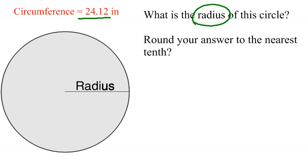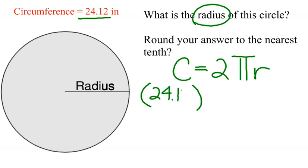You will start with the formula for circumference, C equals 2πr. You will start substituting what you have. What you have here is your circumference. So your circumference here is 24.12 equals 2π.